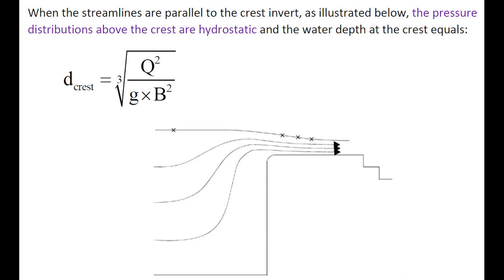When the streamlines are parallel to the crest invert, as shown in the sketch below, the pressure distribution above the crest is hydrostatic, and the water depth at the crest equals the cubic root of q-squared over g times b-squared, where b is the width of the channel.